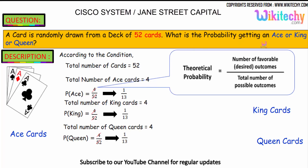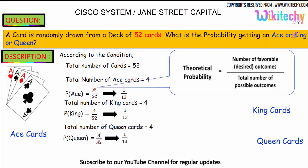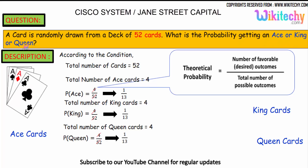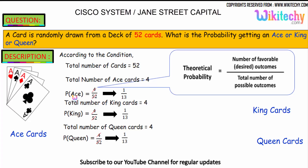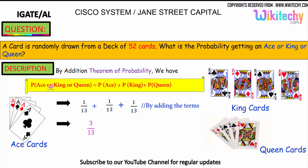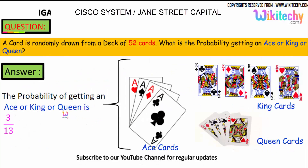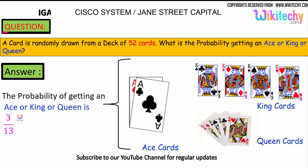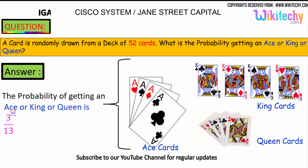The question is the probability of getting an ace or king or queen. So we need to add these: probability of ace plus probability of king plus probability of queen = 1/13 + 1/13 + 1/13 = 3/13. So, the final answer is the probability of getting an ace or a king or a queen is 3/13.